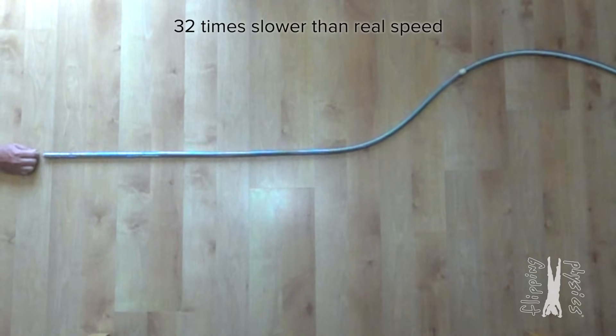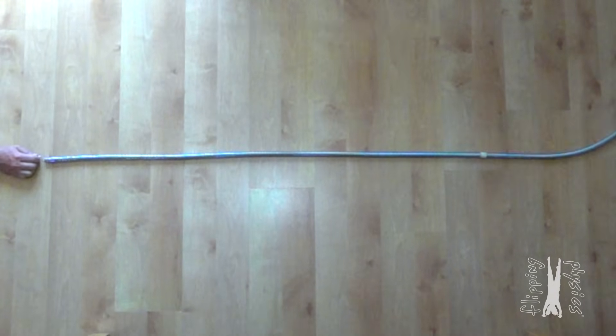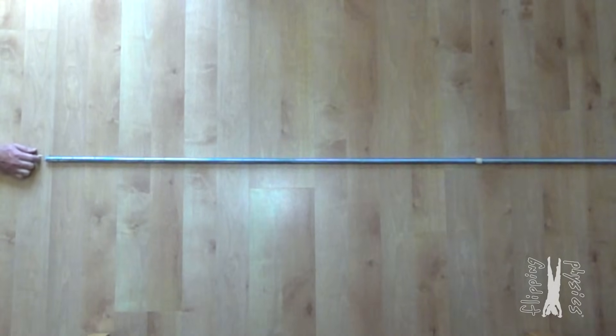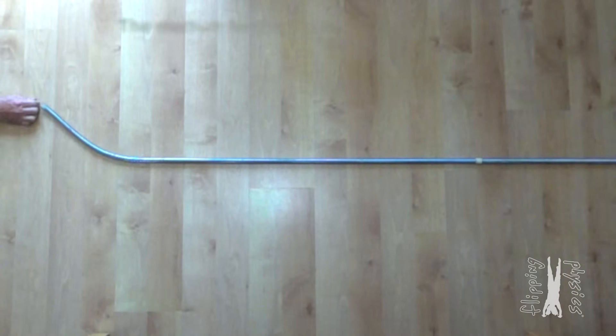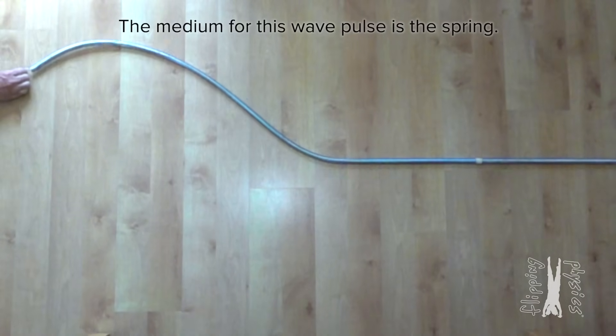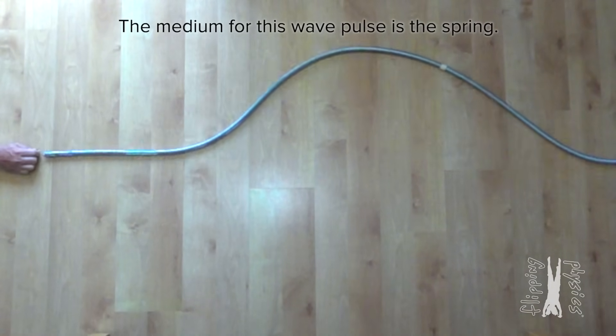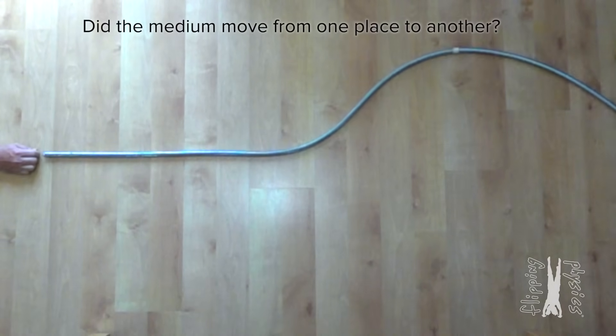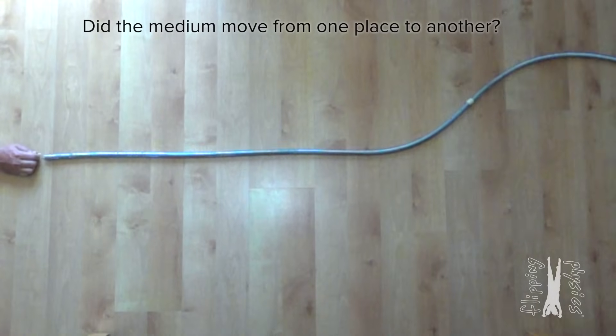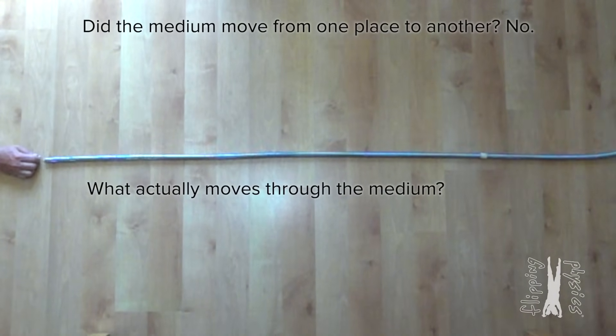Bobby, what is the medium through which the wave pulse is moving? The wave pulse is in the spring, so the medium the wave pulse travels through must be the spring, right? Bobby, that is correct. The medium for this wave pulse is the spring. Remind me class, after the wave pulse goes by, did the medium move from one place to another? No. Then class, what actually moves through the medium? Energy.